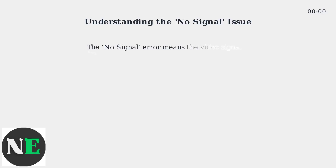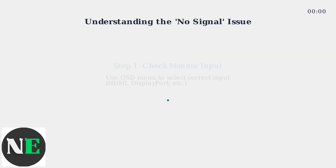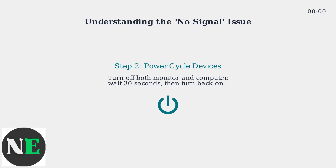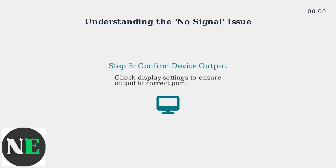The no signal error on your AOC monitor means the video signal from your computer isn't reaching the display. First, ensure your monitor is set to the correct input using the OSD menu. Then, power cycle both your monitor and device by turning them off and back on. Confirm that your device is outputting to the correct port in display settings.